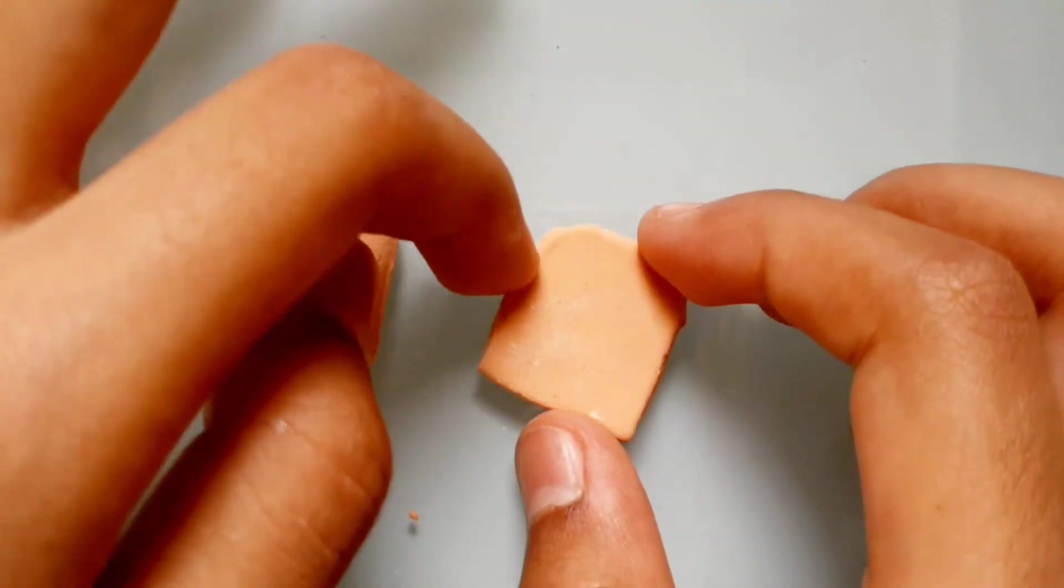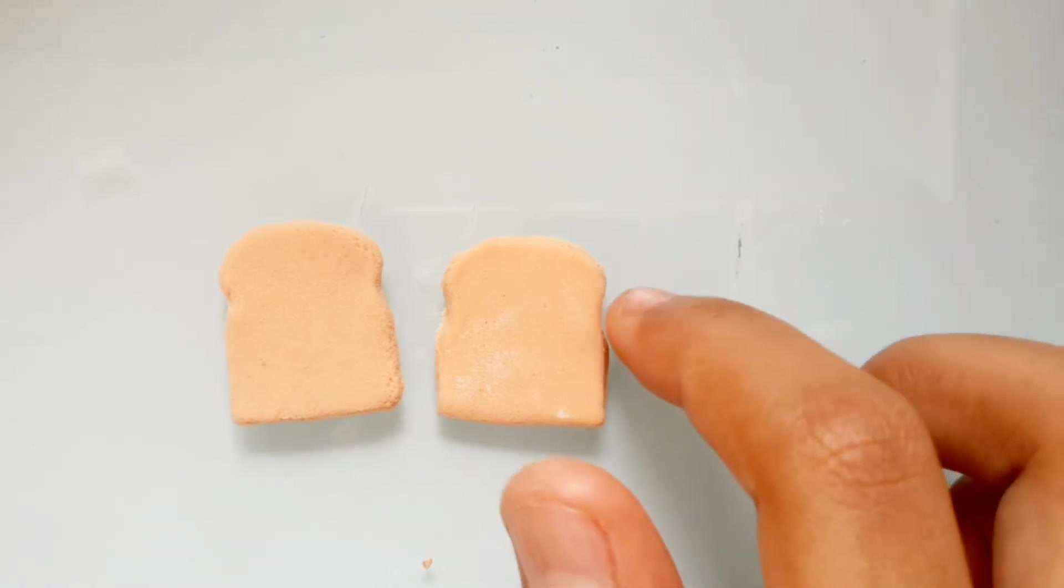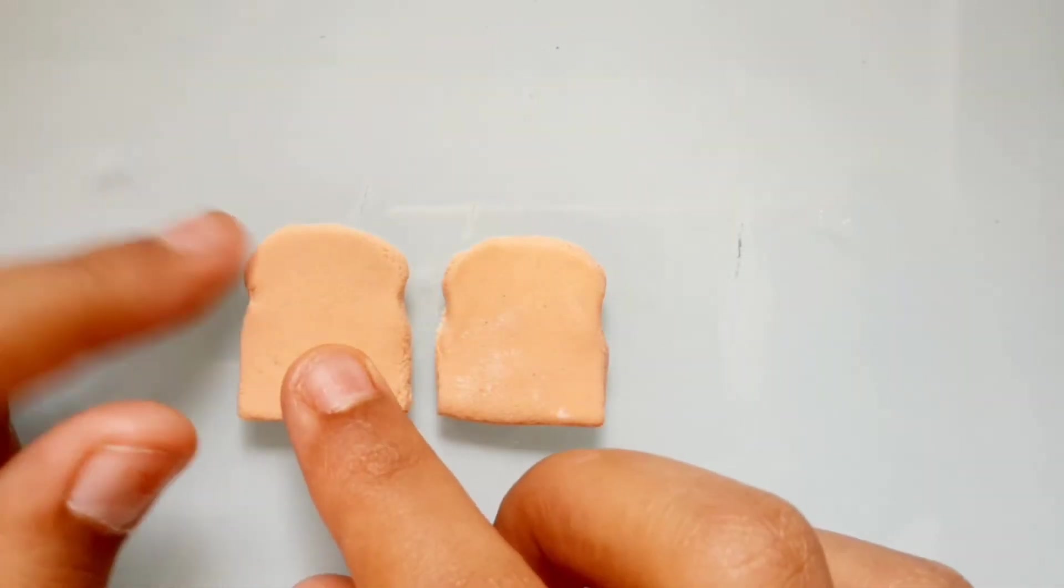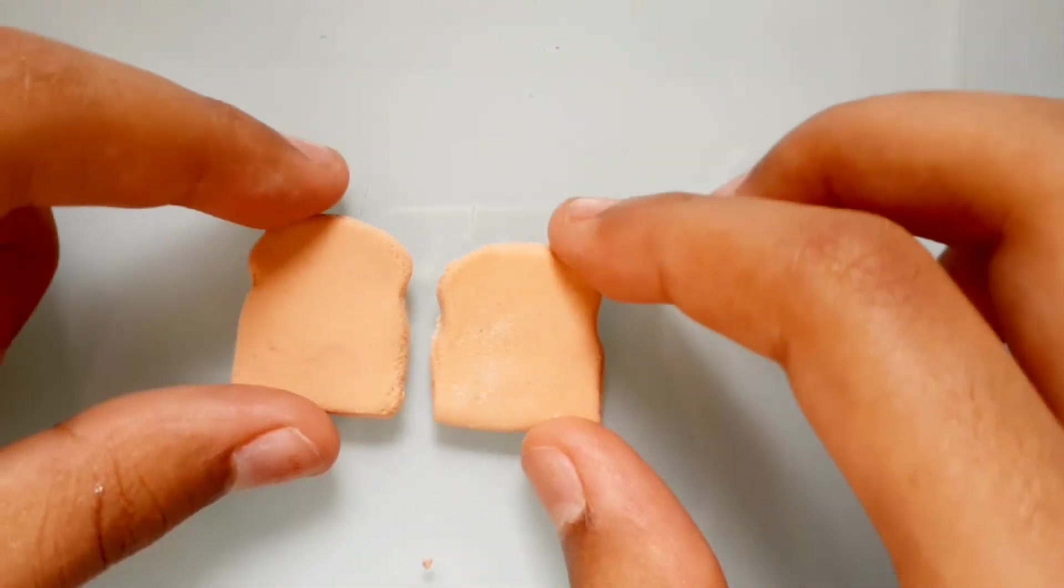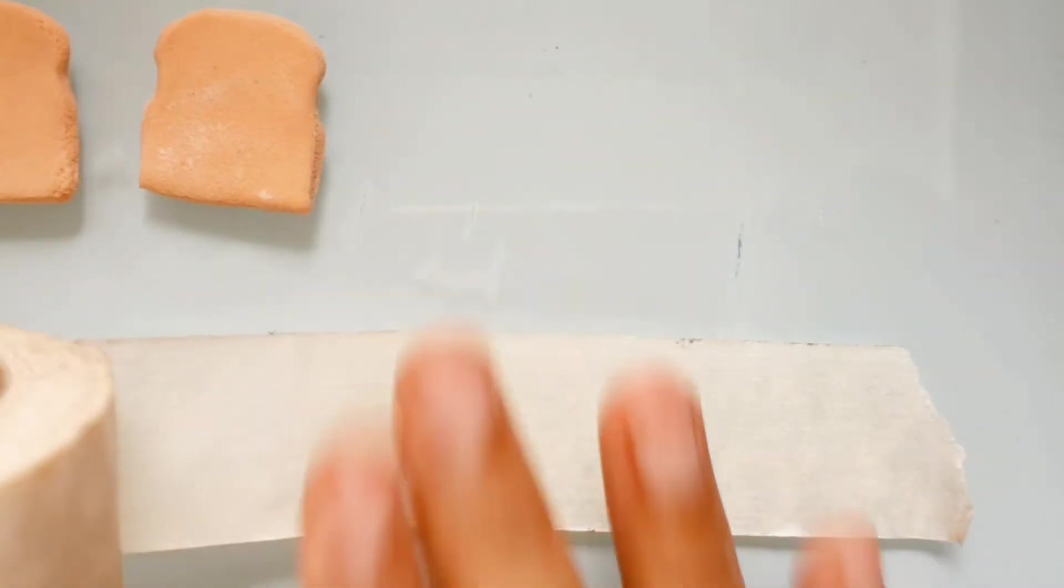Once you're done, with your finger or any other tool, you can just make some indents to give the shape of the bread. Once you're happy, you can keep it aside until you make the glaze.